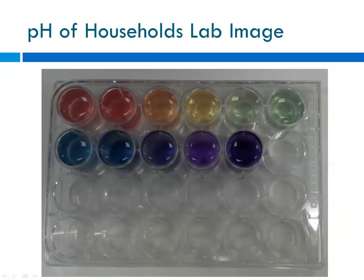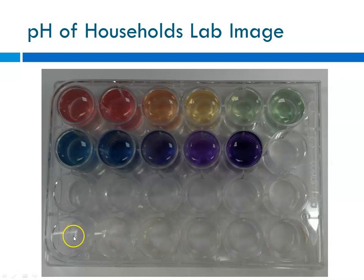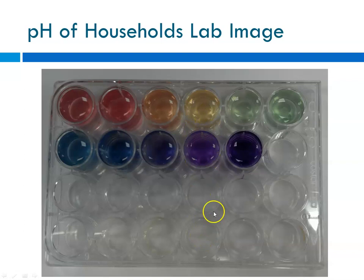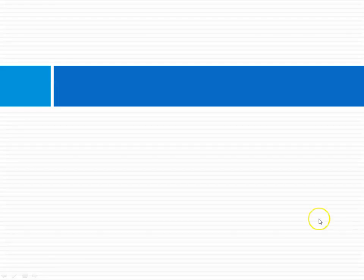When we use the pH of households lab, we make our own range as a reference, then run through and get the various pHs. In the other wells, we would put household ammonia, shampoo, vinegar, or whatever we have on hand, and decide the pH by comparing it to the color. I'm kind of sad that we don't get to do this lab, but it is what it is.